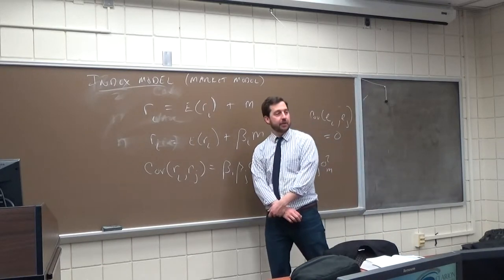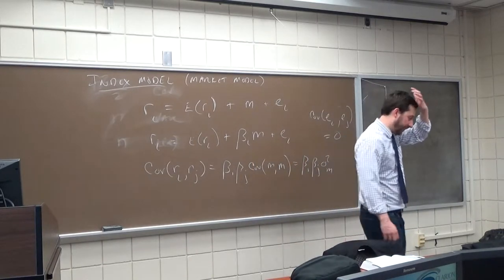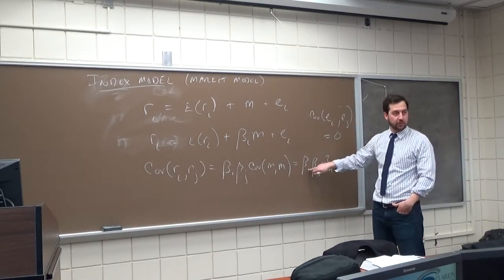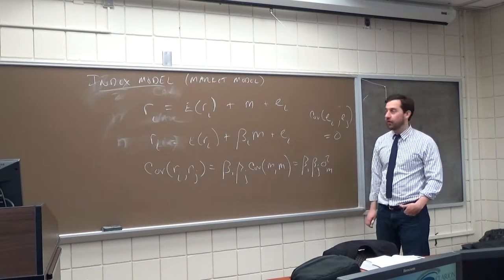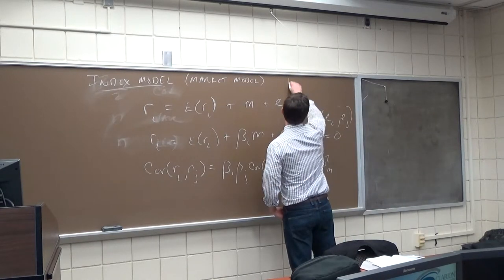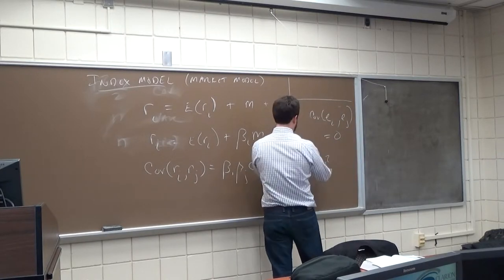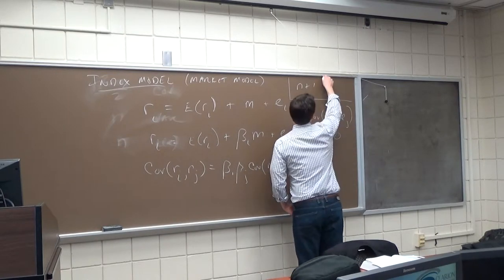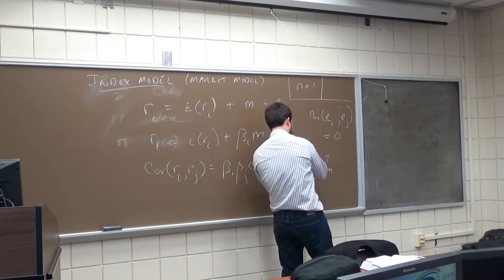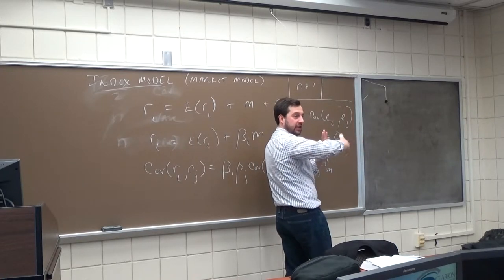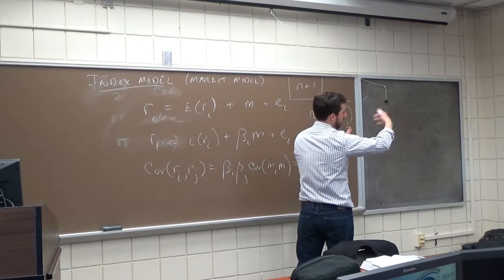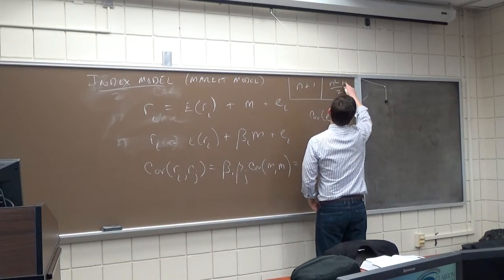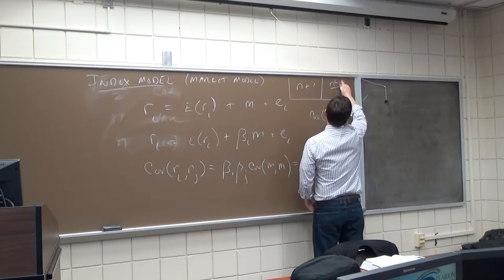This decomposition drops the number of parameters we have to estimate down to n betas plus one macro factor variance — so just n + 1 parameters to get every covariance. Whereas if we calculate covariances individually without decomposing into betas, we need n² minus n divided by 2 covariances and variances — on the order of n².